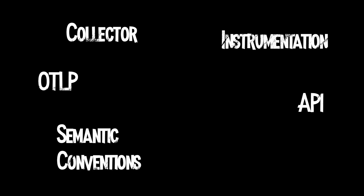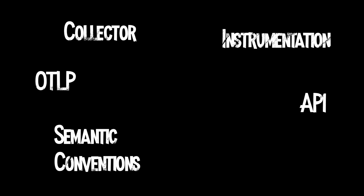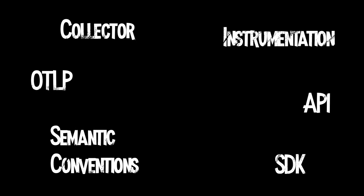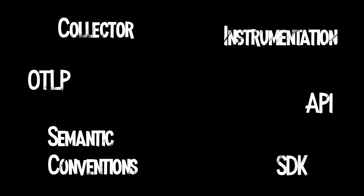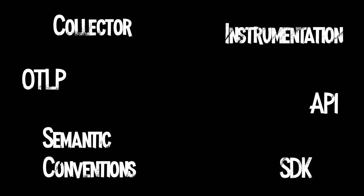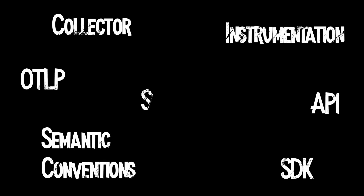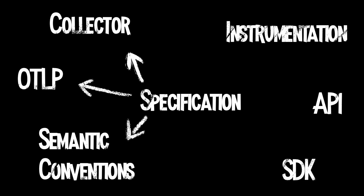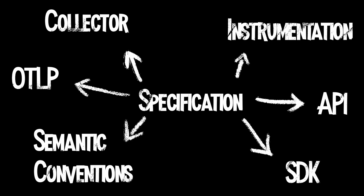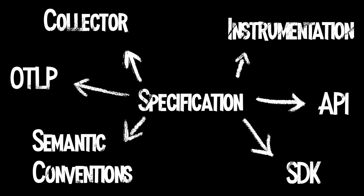Then, in each language, we have an instrumentation API, pre-written instrumentation for most common OSS libraries, and an SDK — which is a framework and a set of plugins the application owner installs for processing and exporting instrumentation. All of these components are defined in the OpenTelemetry specification and maintained by the OpenTelemetry community, which you can find on GitHub, Slack, and Zoom.